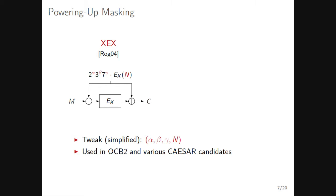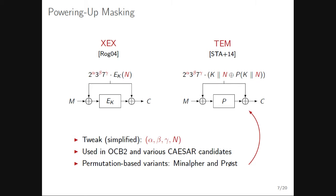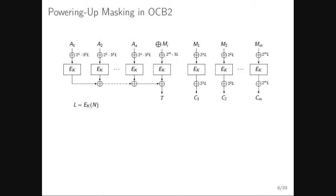This powering-up masking was popular in OCB2 and various CAESAR candidates. In 2014, the Tweakable Even-Mansour construction was introduced — permutation-based, where instead of a block cipher you concatenate the key with the nonce, XOR with the key, and apply the permutation. This is used in CAESAR candidates like Minalpha and Prost.